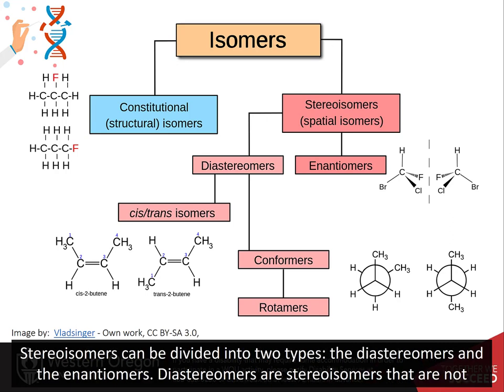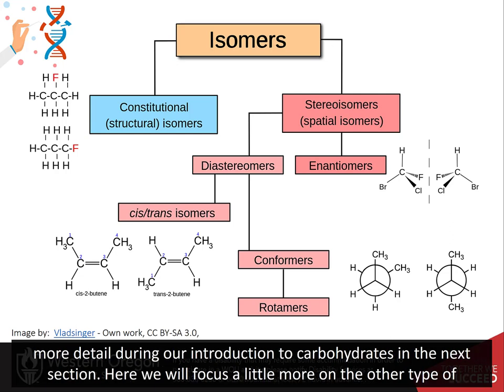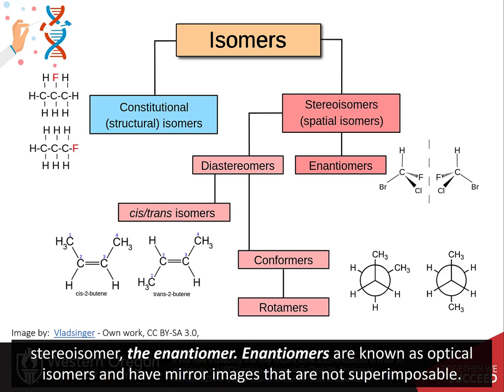Stereoisomers can be further divided into two groups: the diastereomers and the enantiomers. Diastereomers are stereoisomers that are not related through a reflective operation — that means they are not mirror images of each other. We will come back to this type of stereoisomer in more detail during our introduction to carbohydrates in the next section. Here we will focus a little more on the other type of stereoisomer, the enantiomer.